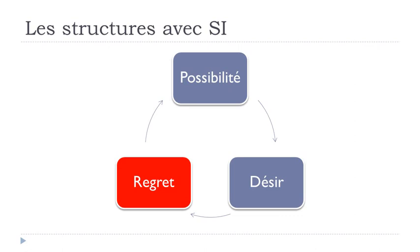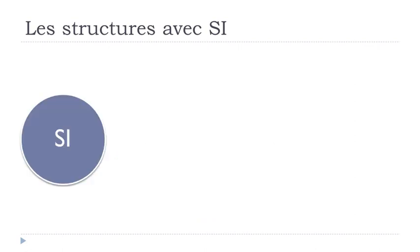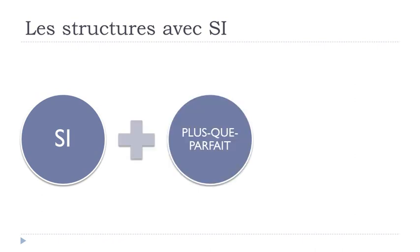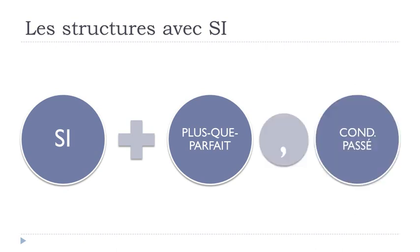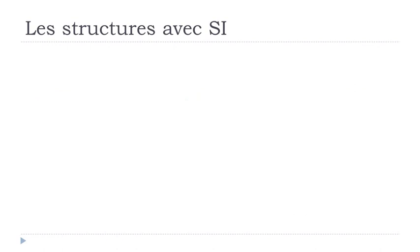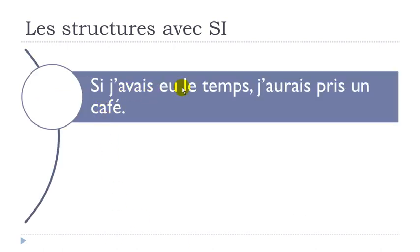The last category: LE REGRET. To express regret, we start with SI followed by LE PLUS-QUE-PARFAIT, then LE CONDITIONNEL PASSÉ. This structure is used when you regret something that is over — it's in the past and you cannot change anything. Example: SI J'AVAIS EU LE TEMPS, J'AURAIS PRIS UN CAFÉ. The idea is it's over, so you just regret it.